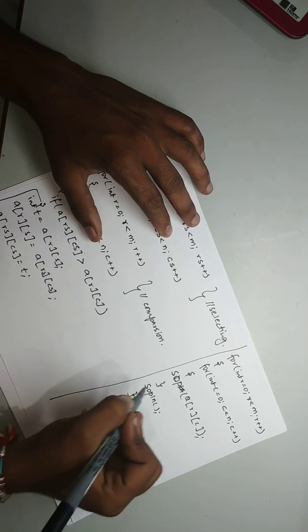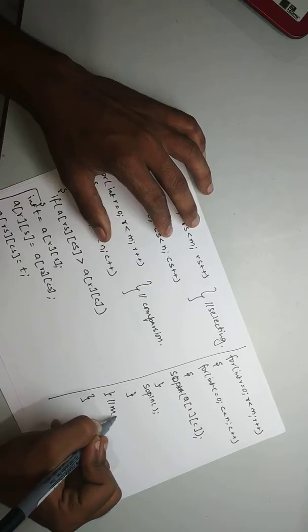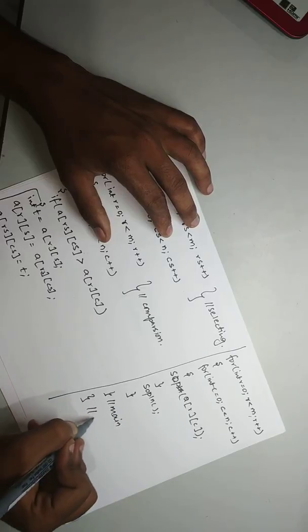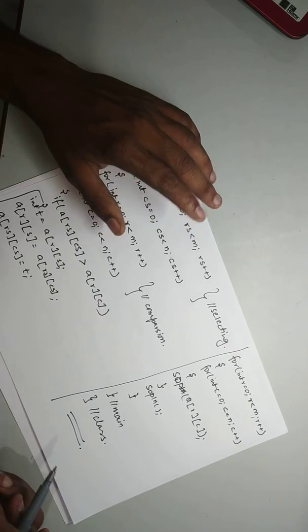So this was the basic printing and after printing close the main and close the class. This was the main and this was the class. So that's all about this tutorial thank you.